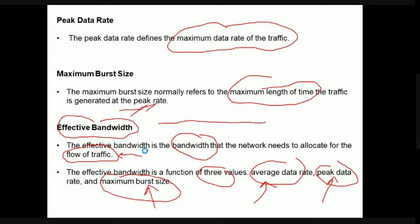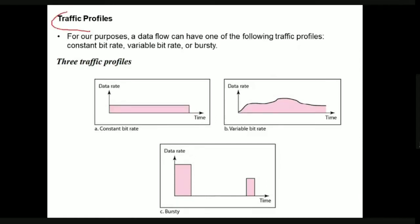Next we discuss traffic profiles. There are three important traffic profiles: the first is constant bitrate (CBR), the second is variable bitrate (VBR), and the third is bursty traffic.